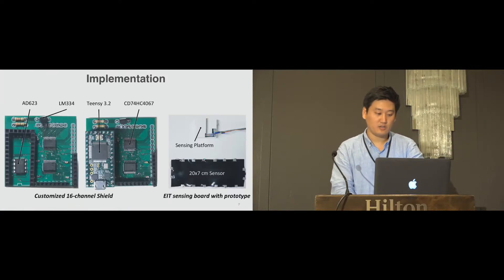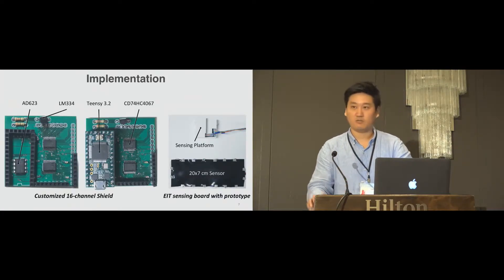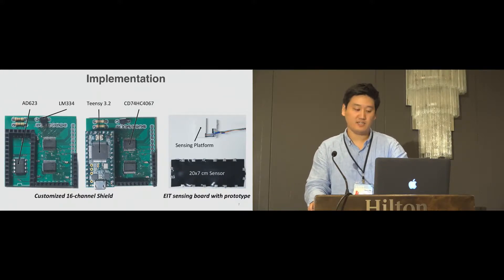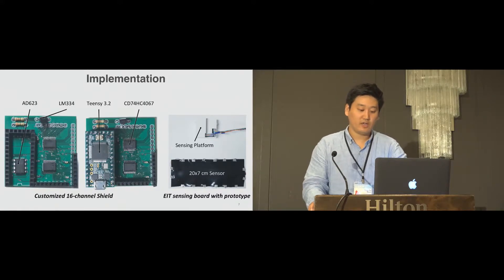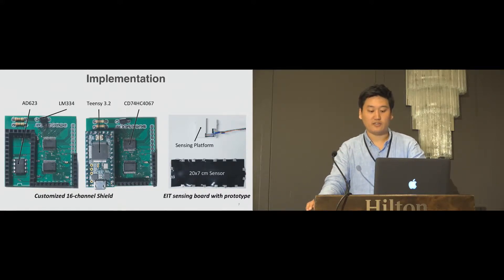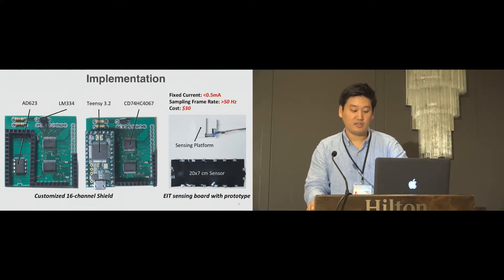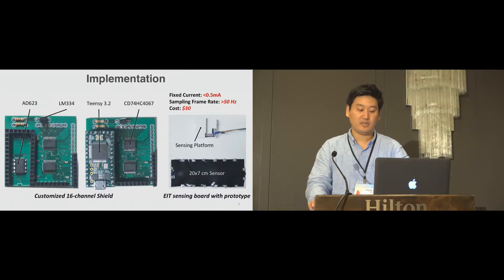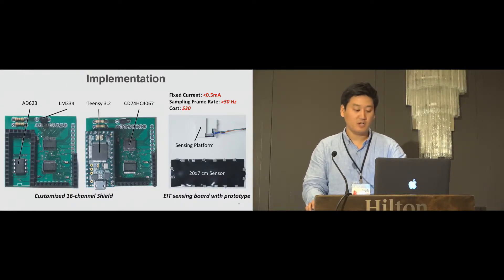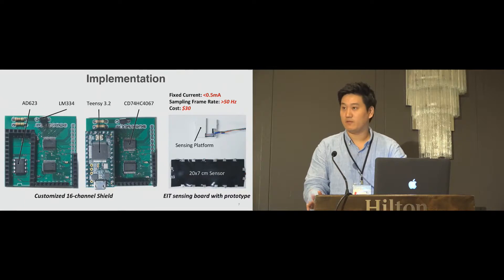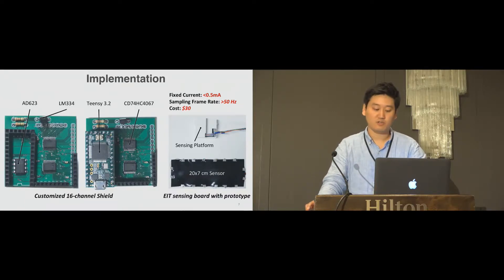Here is our overview of implementation of electronic parts for EIT sensing. We mainly utilize a 16-channel multiplexer with a microcontroller and attach a current source and linear amplifier to provide fixed current and read voltage measurements. Here we apply less than 0.5 milliampere for the fixed current and observe frame rate greater than 50 hertz. The cost of making these electrical components, including microcontroller, was about $30, and this can be further reduced over commercial production phases.